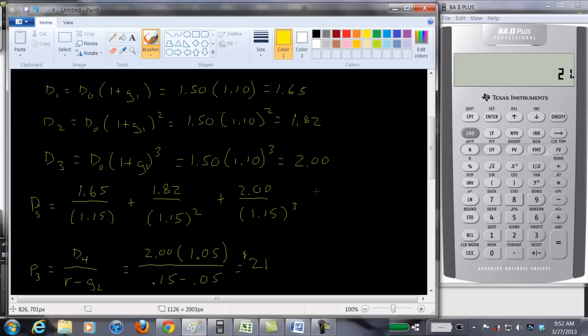Alright, so we want to add this in here. $21. But remember, that's in year three, so we also have to discount this by 1.15 to the third power. Okay, I could have put this whole formula in and then divided it by 1.15. But you can see what I'm doing. I think it's simpler to find the price of the stock in year three and then just substitute it in here.